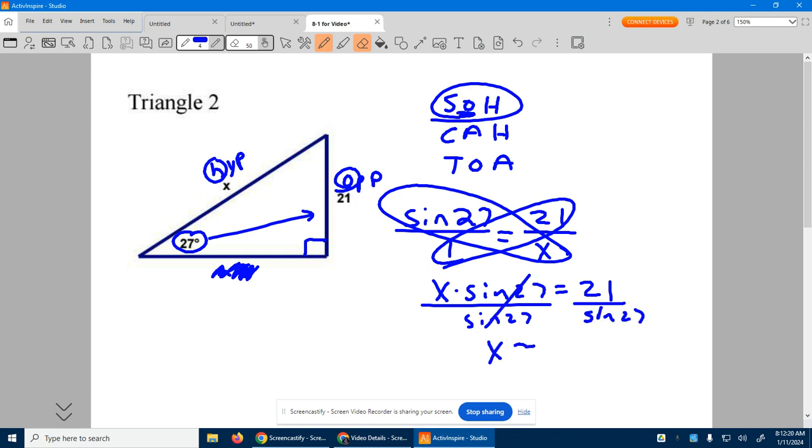So we get X by itself, and all I need to do is get the calculator, make sure it's in degree mode, and do 21 divided by sine of 27, and I got 46.3 approximately, rounded to the tenths. So the hypotenuse right here is about 46.3.